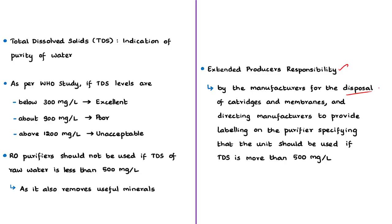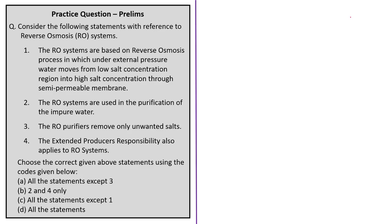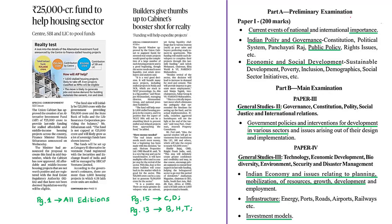This news article is about the non-compliance of the above order issued in May 2019. To conclude, we have discussed the process of osmosis, the process of reverse osmosis, reverse osmosis systems, and the National Green Tribunal order. Now have a look at the practice question.